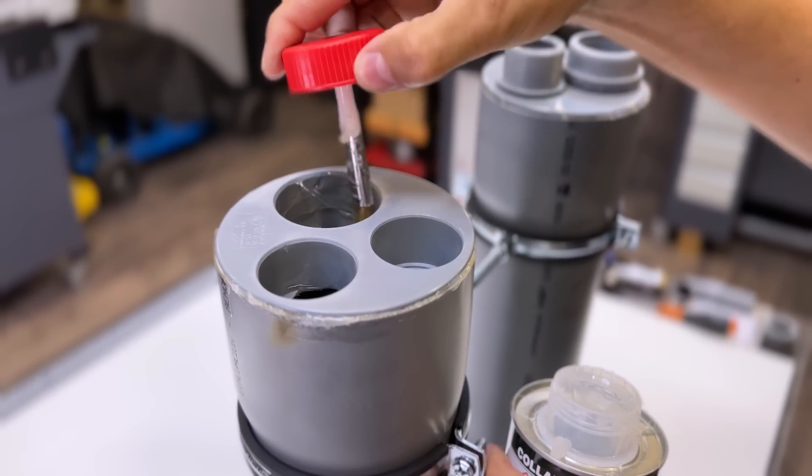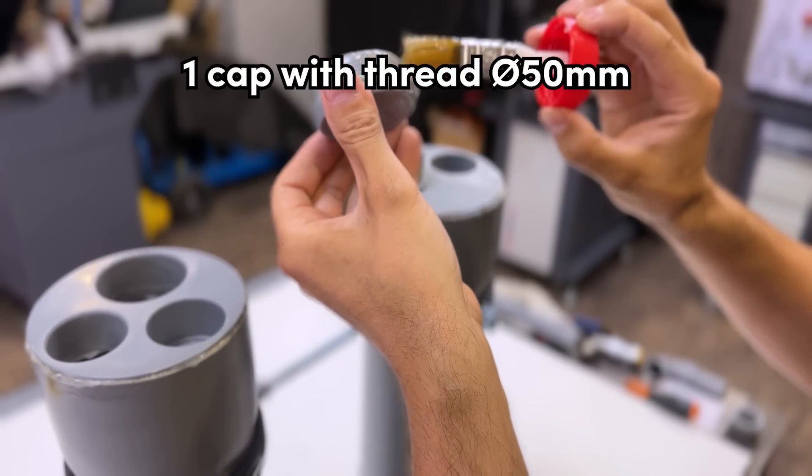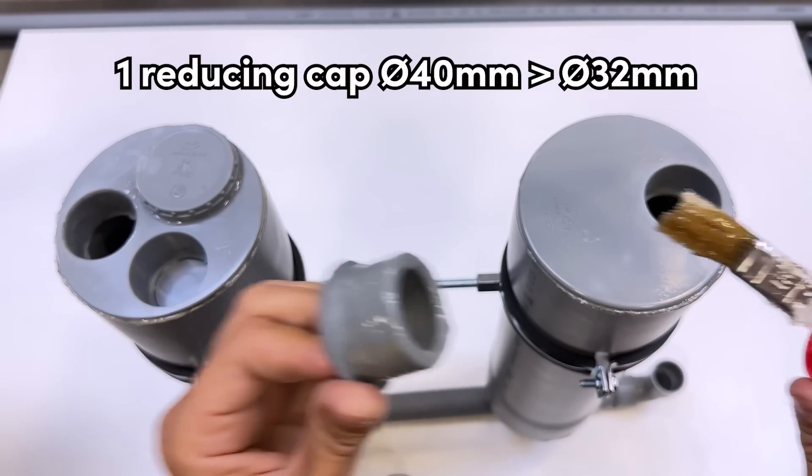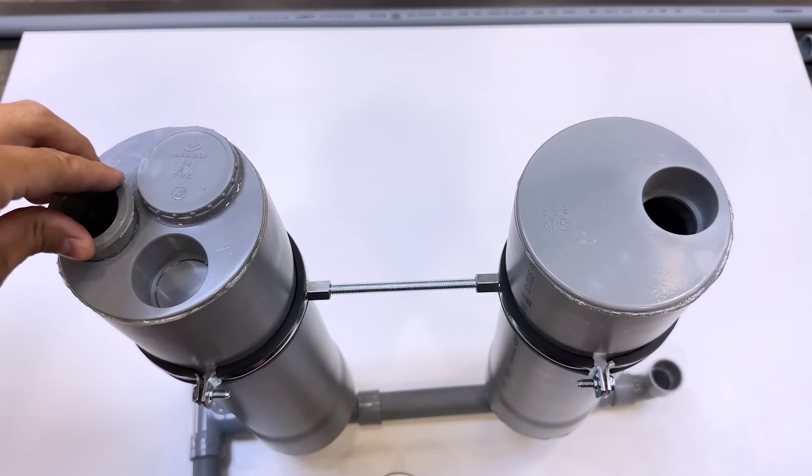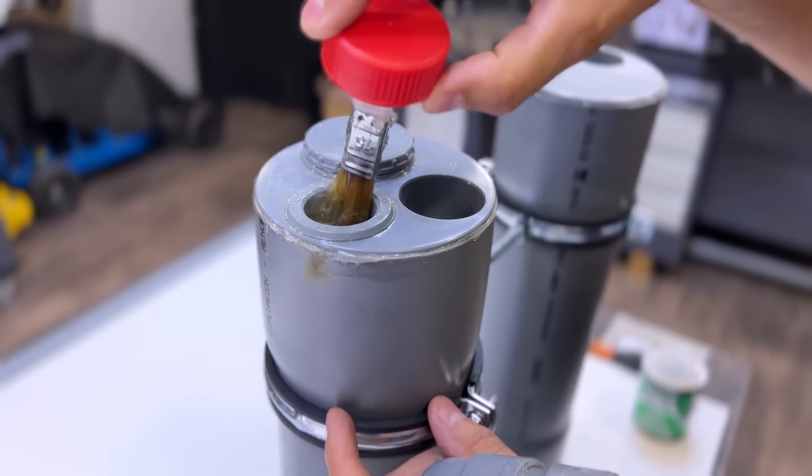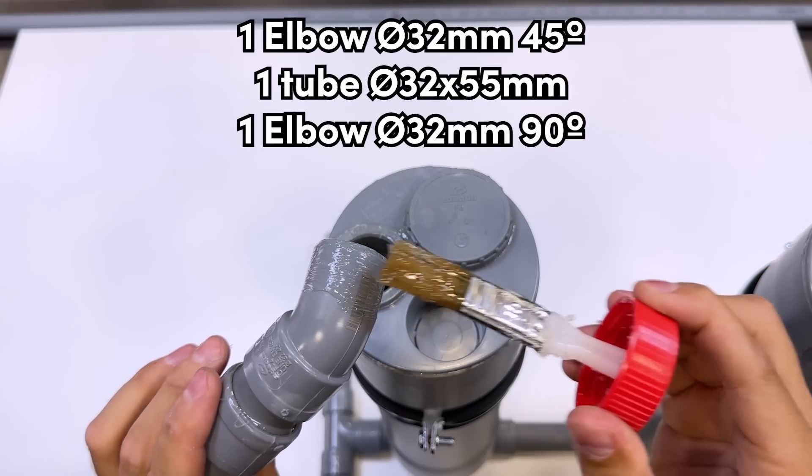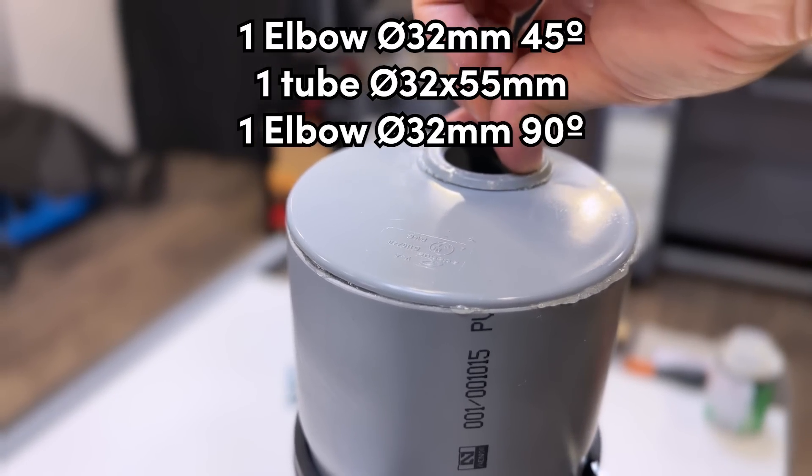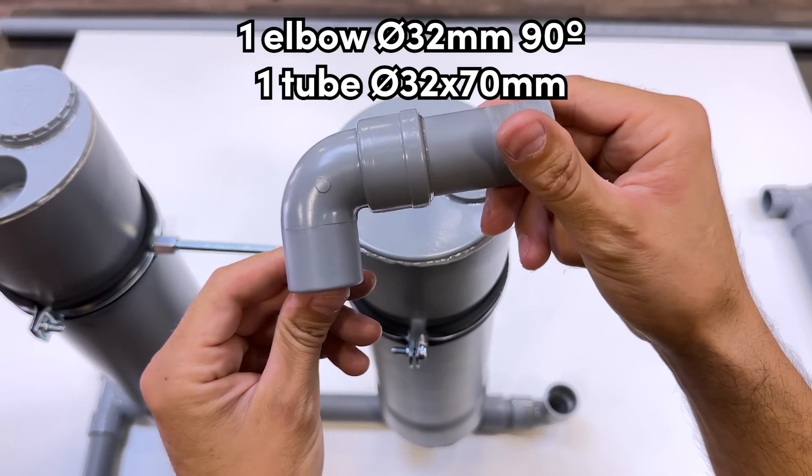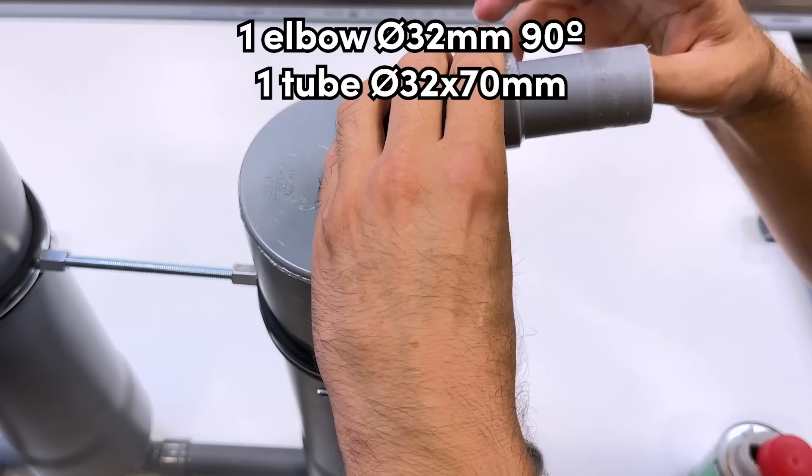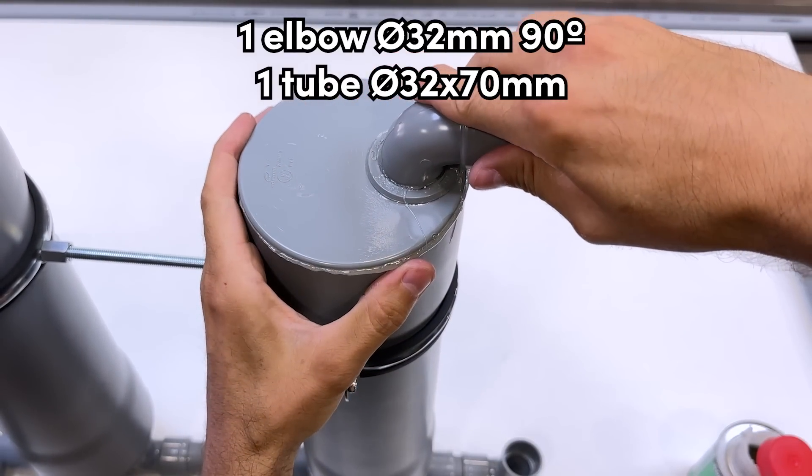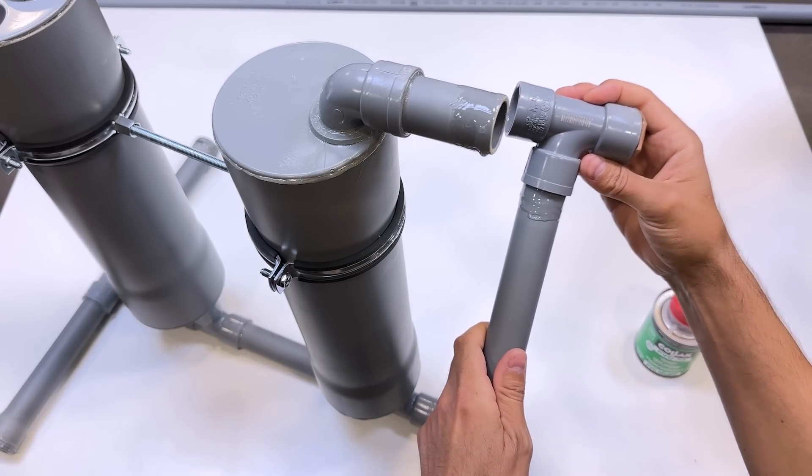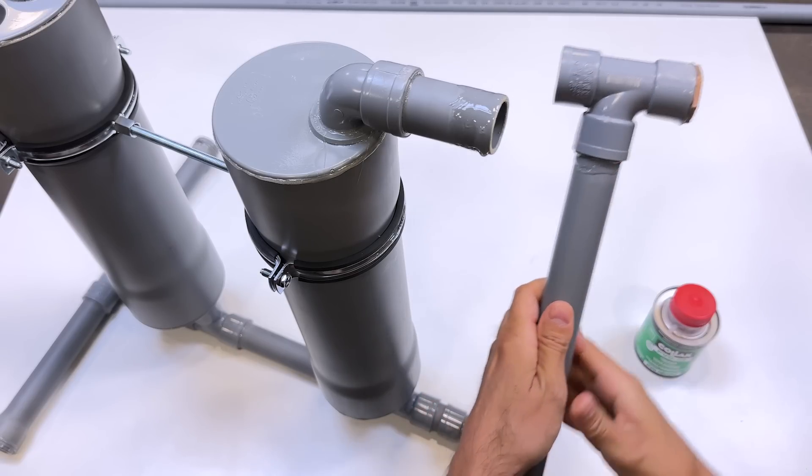Now we will glue these two couplings. One of them is a 50 millimeter diameter threaded plug. And the other is a 40 to 32 millimeter diameter reducer. Now we glue this assembly consisting of a 45 degree elbow, a 32 for 55 millimeter diameter pipe, and a 90 degree elbow. And here we will glue this 90 degree elbow together with a 32 for 70 millimeter diameter pipe. We will finish by gluing the T-shaped coupling to which we previously attached the fitting, along with this 32 for 432 millimeter diameter pipe.